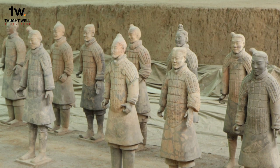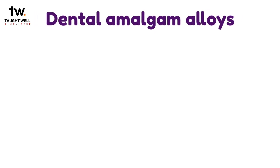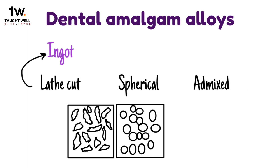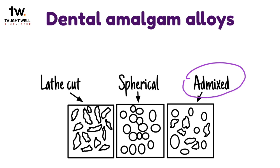The first use of amalgam for tooth filling was recorded in Chinese medical literature in 659 AD. Before these alloys are reacted with mercury, they are known as dental amalgam alloys or alloys for dental amalgam. They are usually provided as either irregularly shaped particles produced by milling or lathe cutting a cast ingot of the amalgam alloy, or as spherical particles produced by atomizing the liquid alloy in a chamber filled with inert gas, or as a mixture of both lathe cut and spherical particles.